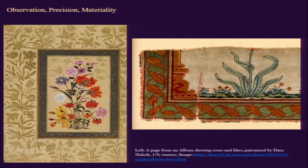Hello everyone, this is Rajishi Sangupta and we are in Week 3 of our course. We have been talking about cloth or the idea of textiles in the Mughal context. In the last lecture we touched upon similarities, differences, and technical aspects of making carpets. A few keywords to remember in this context: observation, precision, and materiality — these three things can be interconnected.